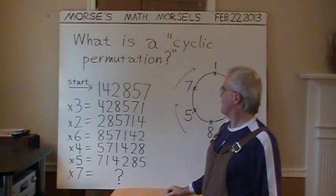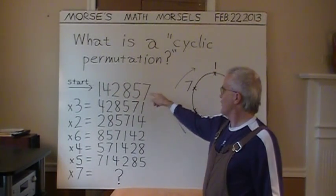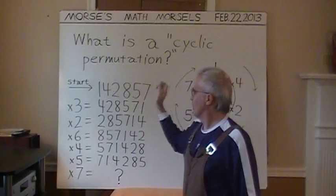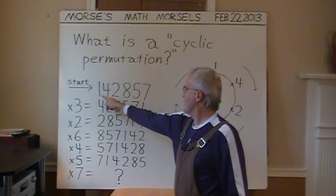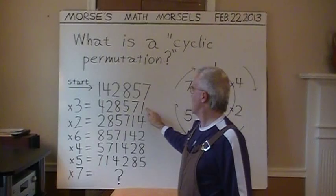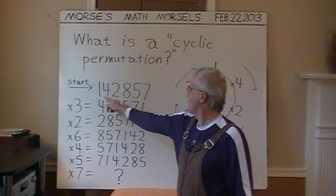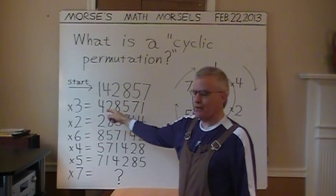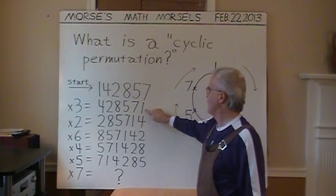So, the demonstration is going to start at 142857. To multiply that number by three, merely take the digit one and move it to the right. And the other five digits are pushed to the left, and the one is inserted into one's place.